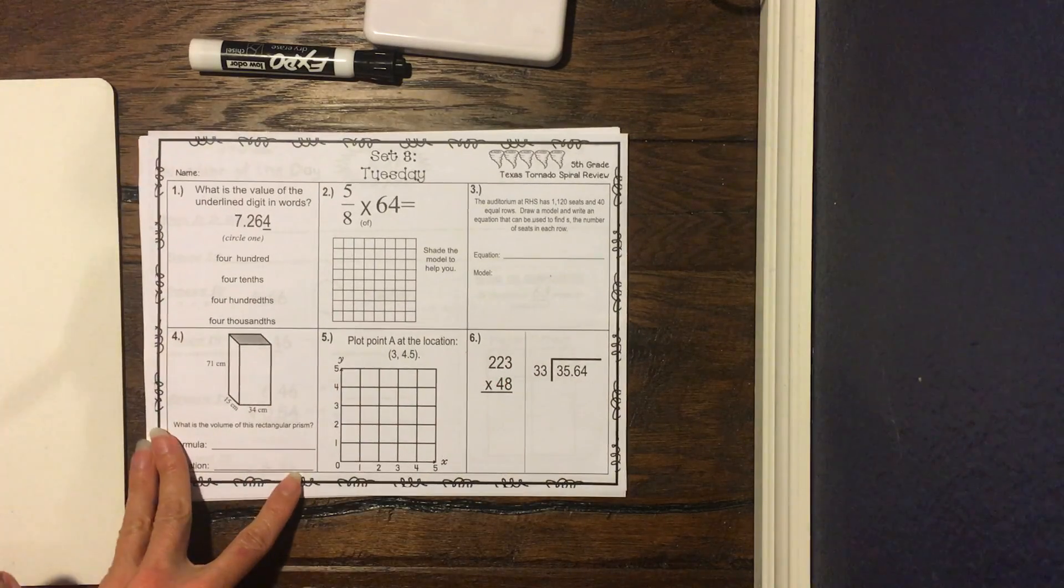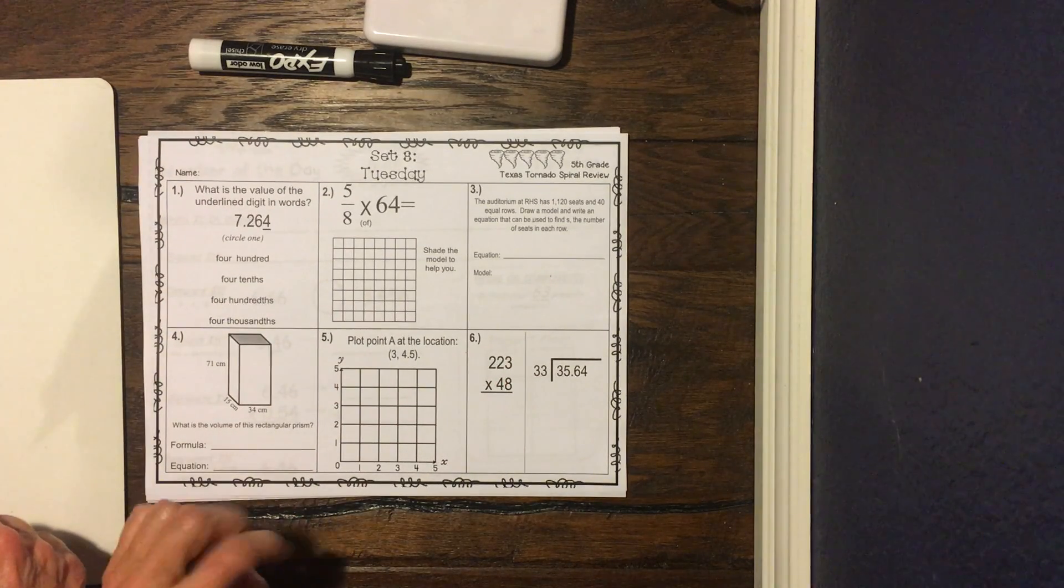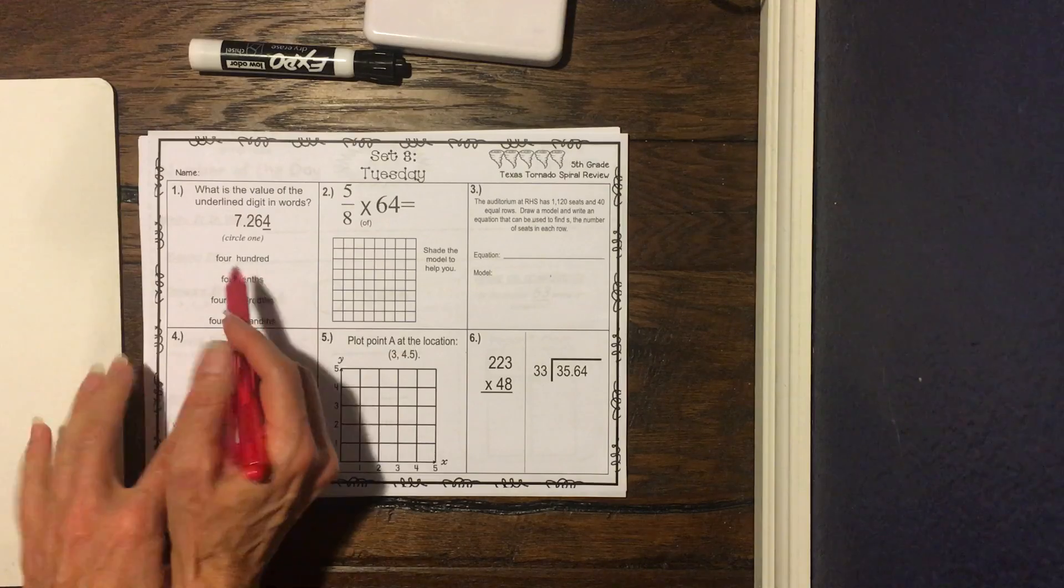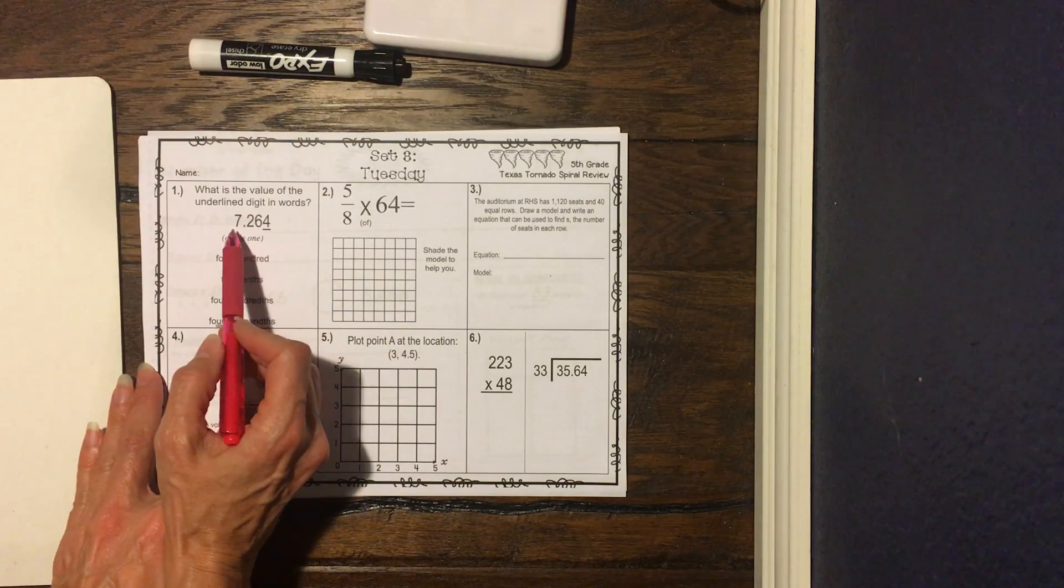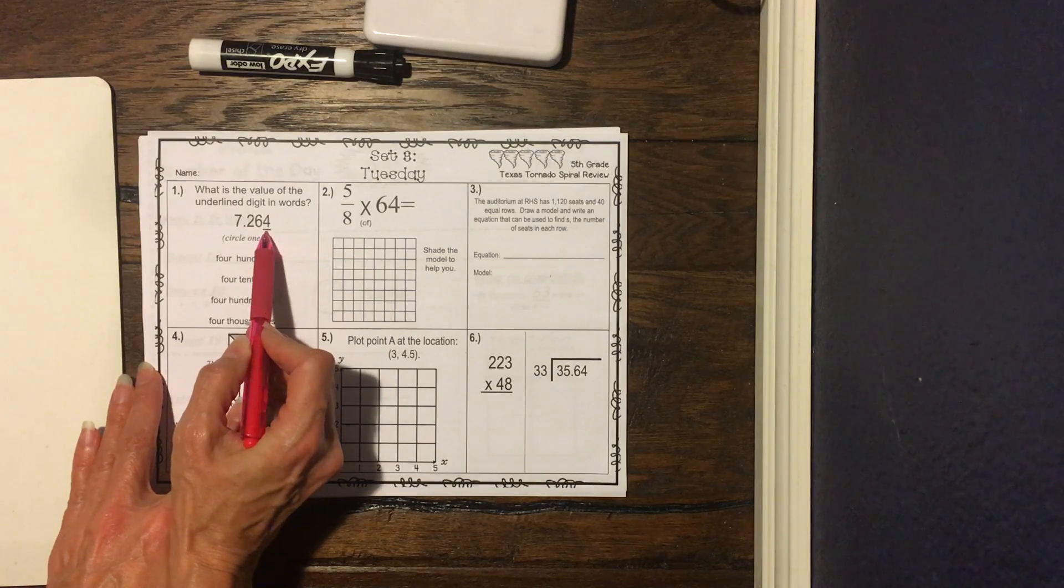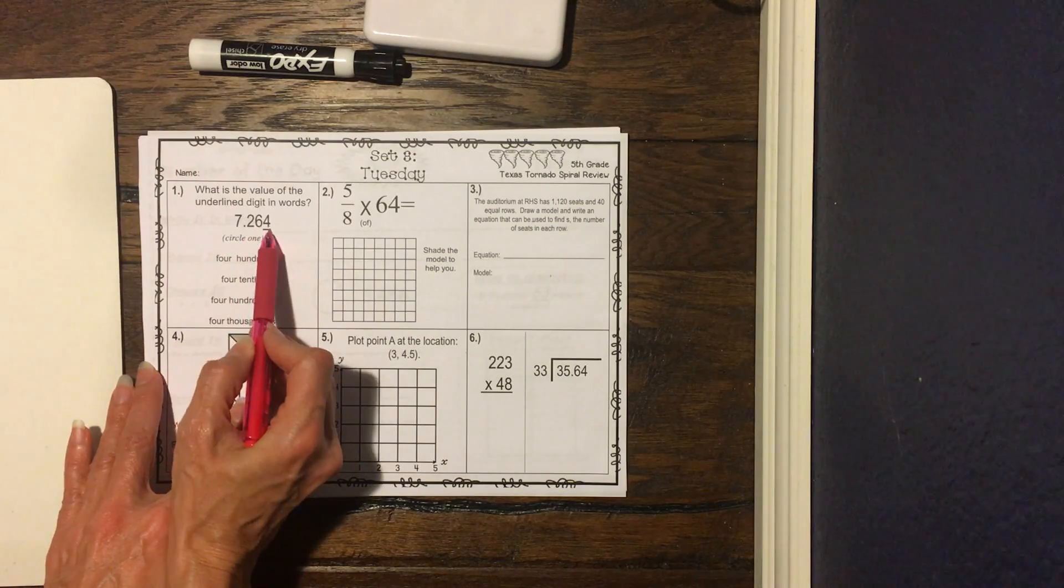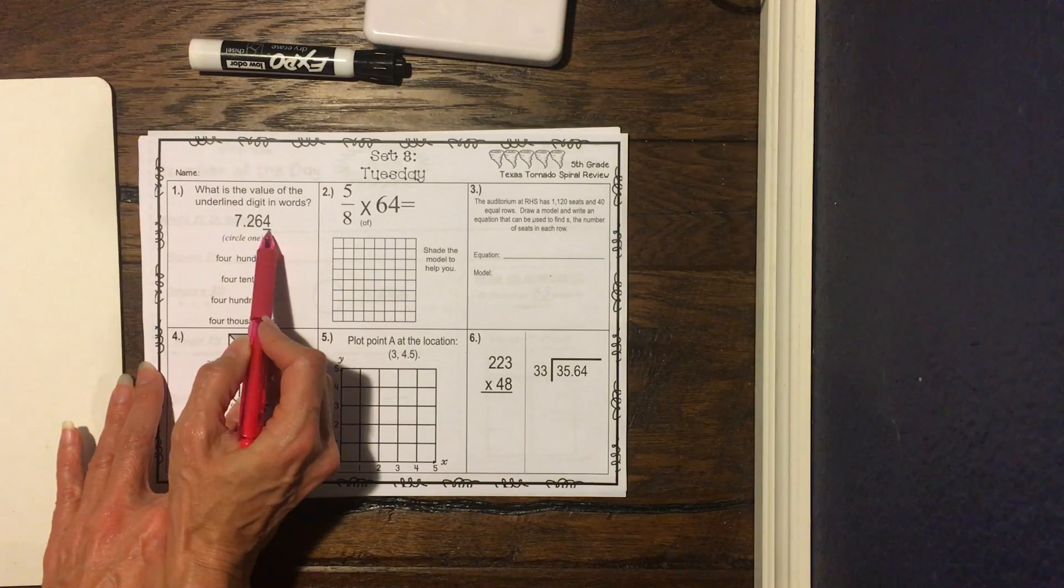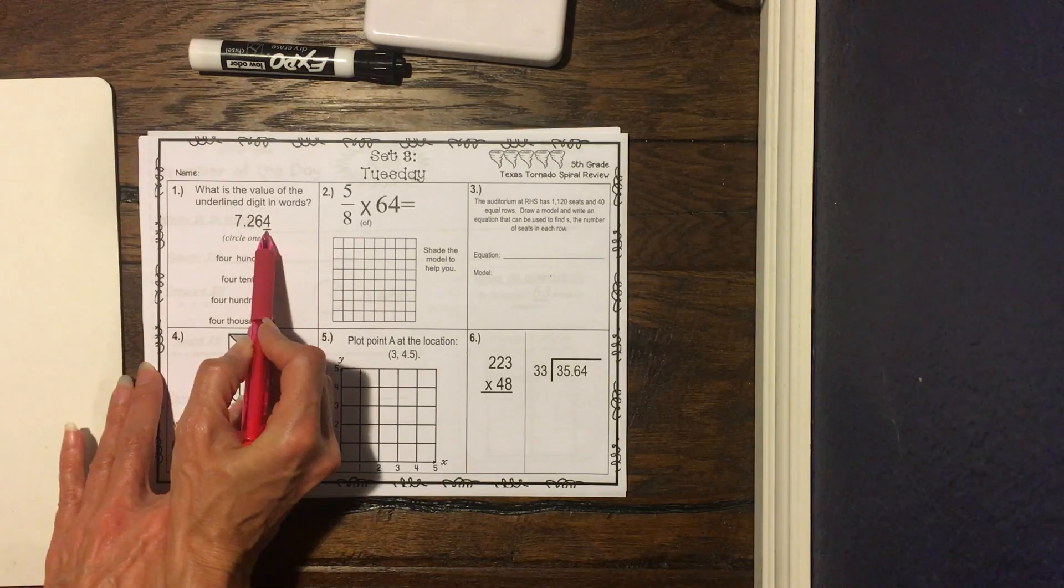Let's start with number one. It says, what is the value of the underlined digit in words? So again, we're gonna look at the number. This is seven and 264, and what place value is that?